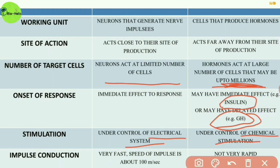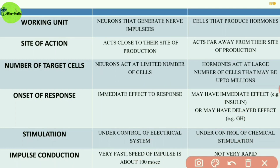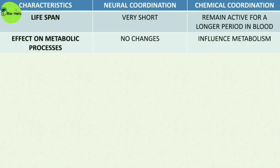Neural coordination and chemical coordination can also be differentiated depending upon impulse conduction speed. The impulse conduction speed of neural coordination is very fast — about 100 meters per second — but impulse conduction in chemical coordination is not very rapid. The lifespan of a neural coordination impulse is very short, but in chemical coordination, hormones remain active in the blood for a longer period. Neural coordination has no effect on metabolic processes, but chemical coordination influences body metabolism.